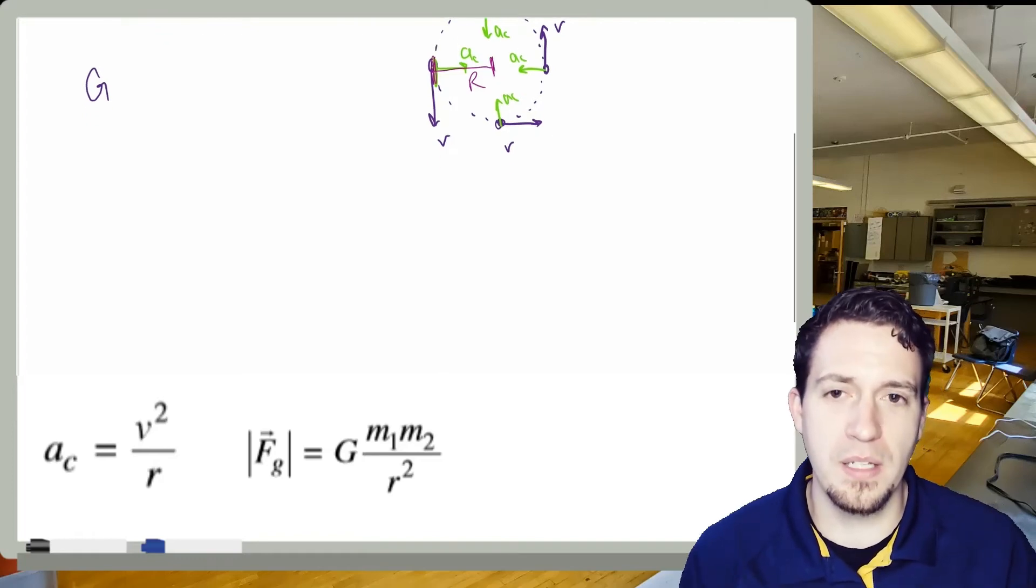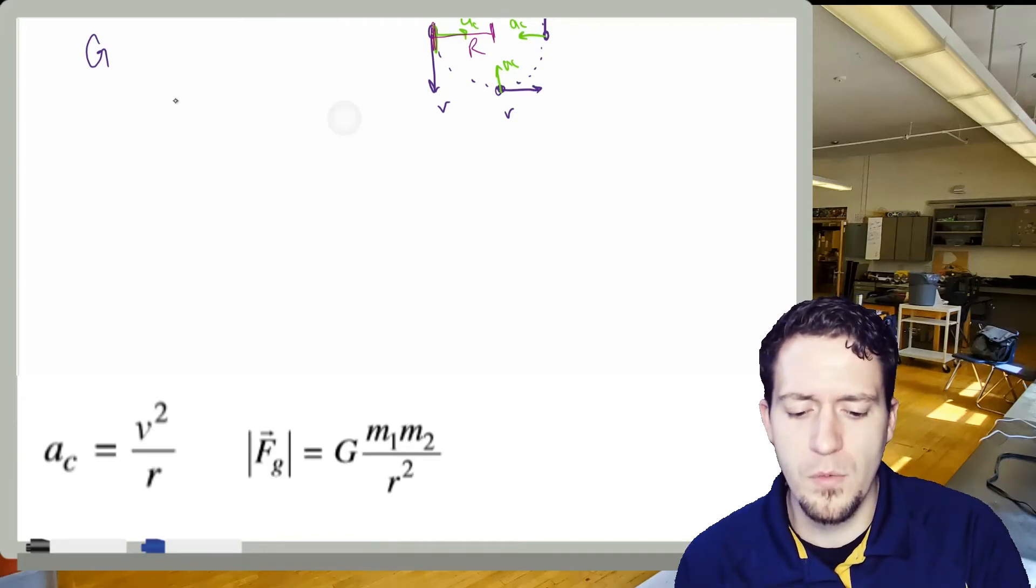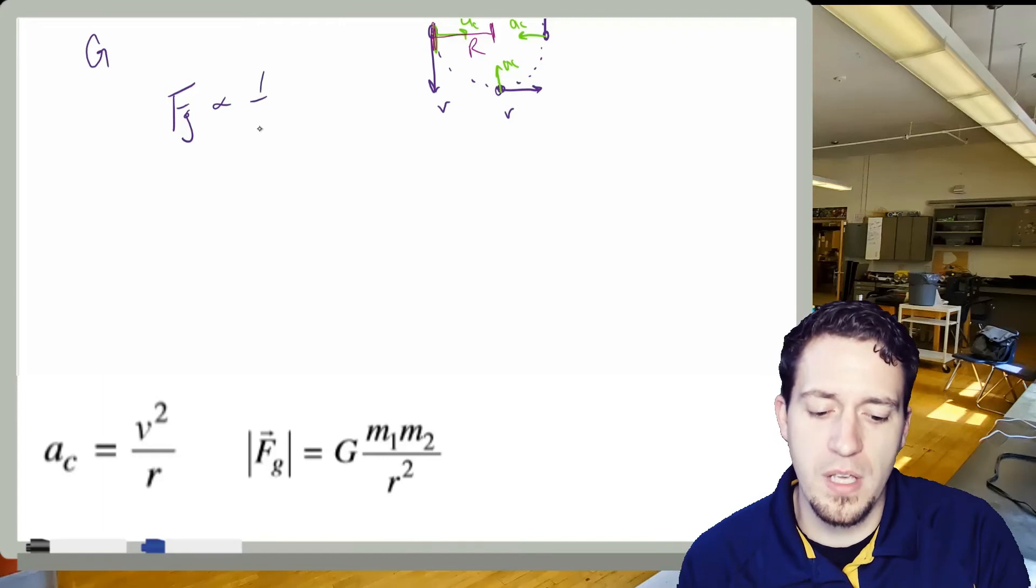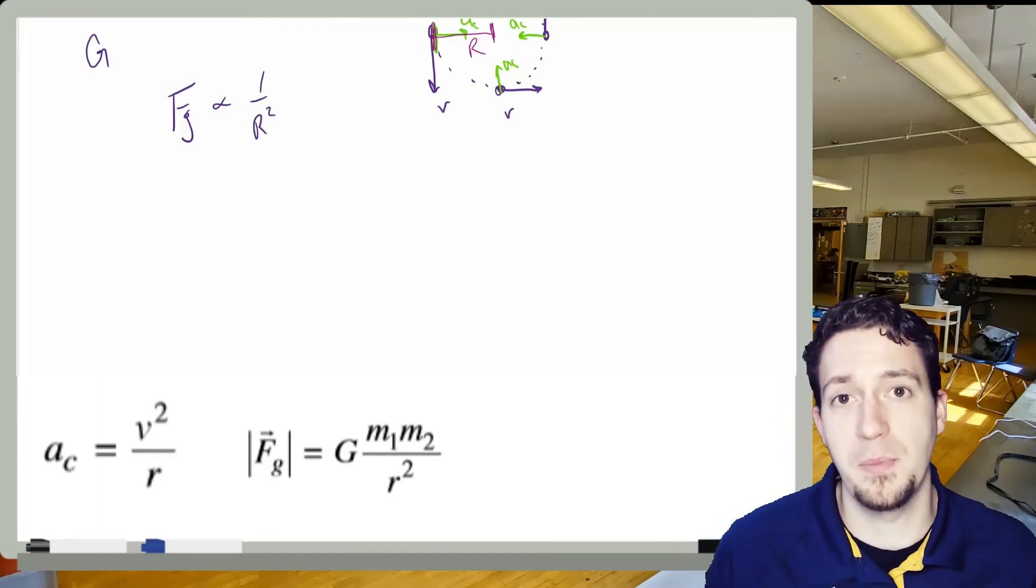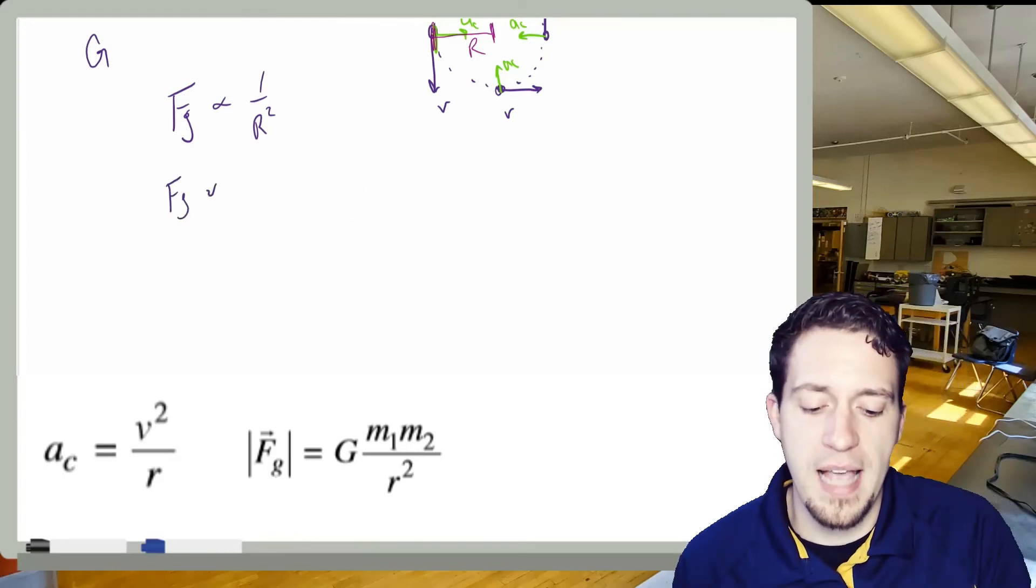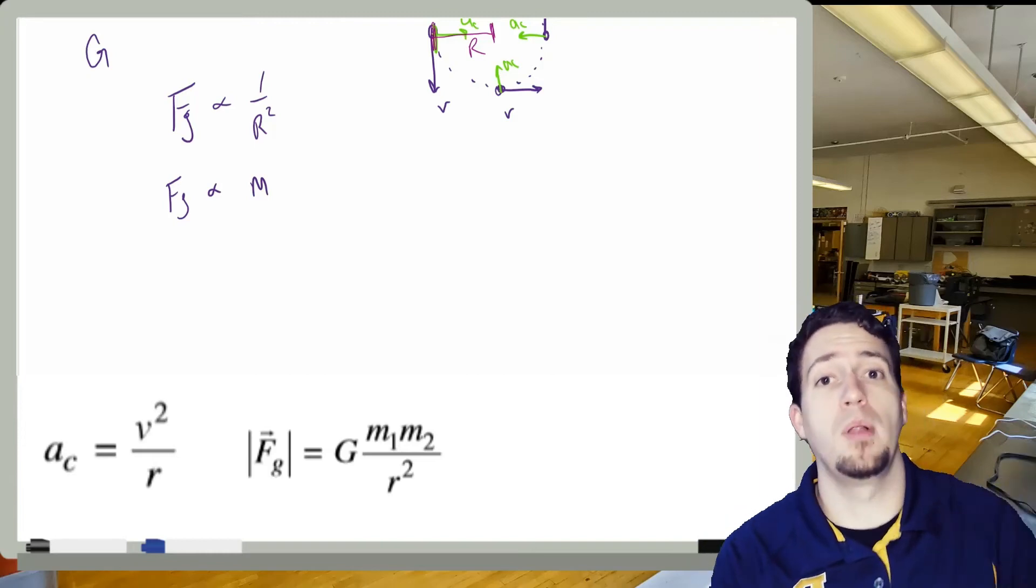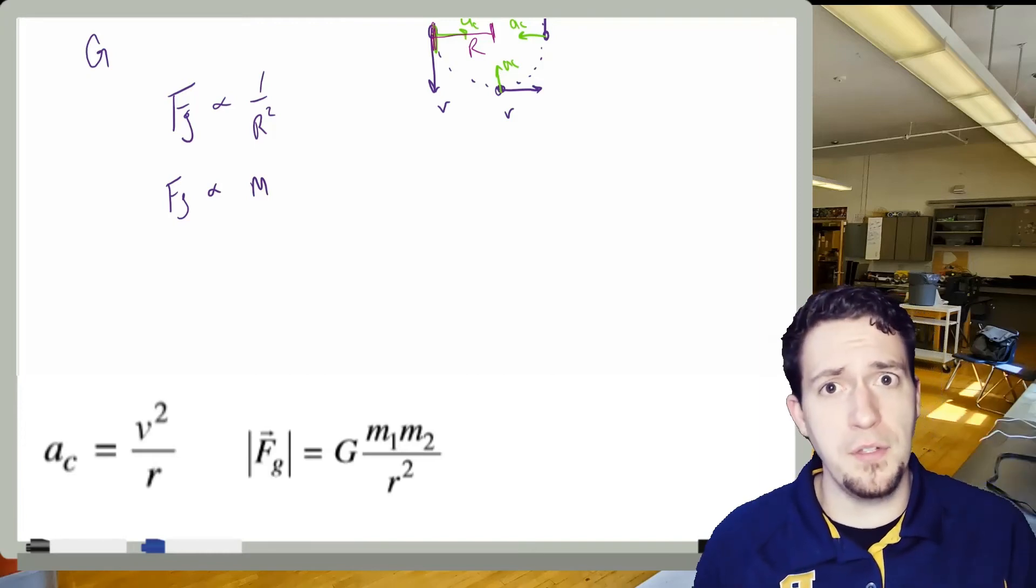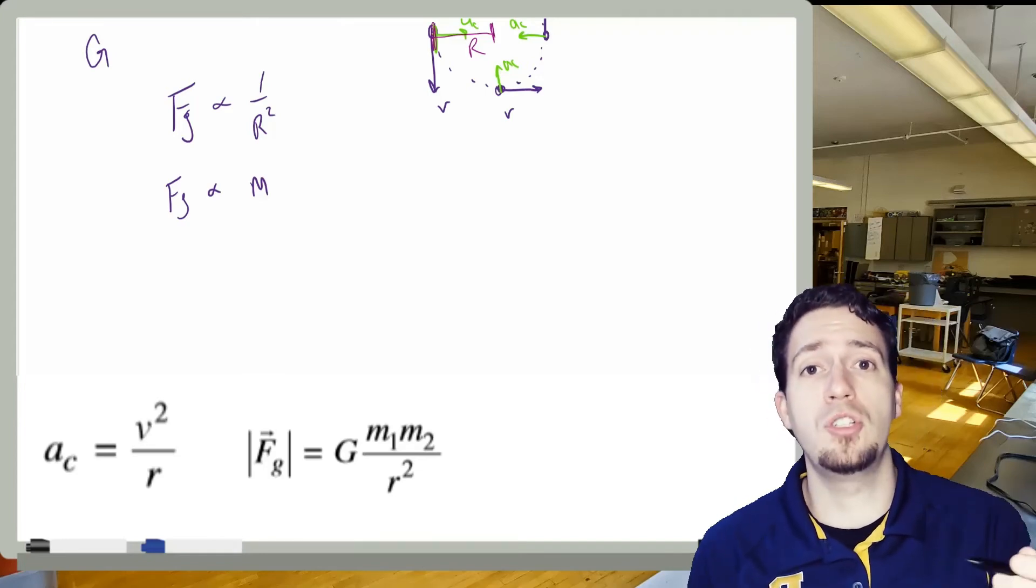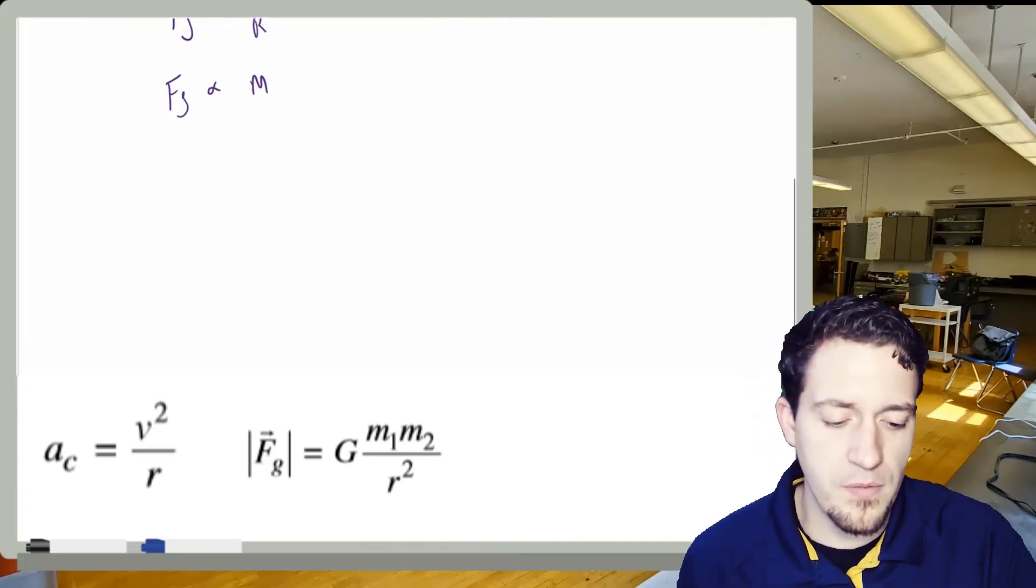Those are the two masses that are involved in whatever I'm dealing with. And R is officially defined as the distance between centers. Now, some of the things that we had done with this was some simple problems. And we noticed that R is squared. So if we want to think about FG, FG is actually proportional to 1 over R squared. And we had talked about this as being an inverse square relationship. But meanwhile, FG is actually directly proportional to mass. So if you double mass, you double FG. But if you double R, you double the distance, you definitely do not double FG. It's actually inverse square.